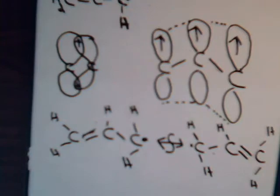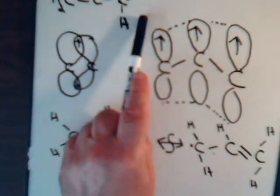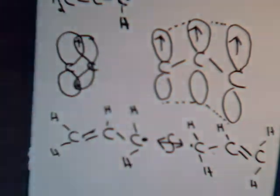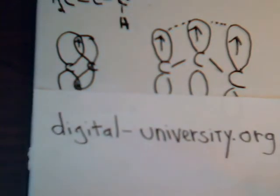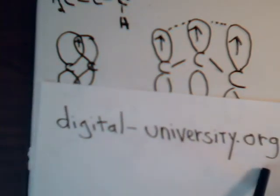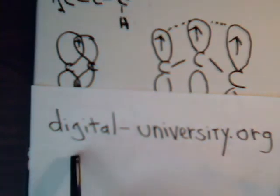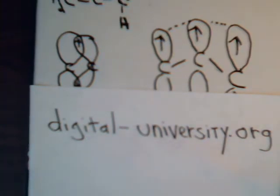Okay, that's it then for the propene molecule and the allyl radical. In the next video, video number seven, we will talk about carbon dioxide and its different resonance structures. The playlist for these videos is at the website at digital-university.org. Thank you very much.